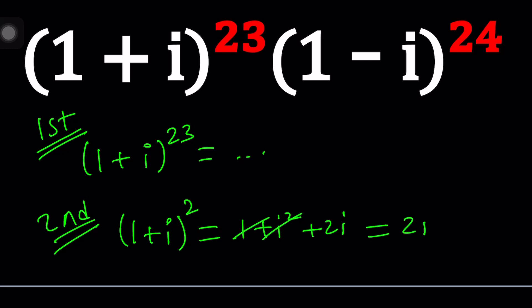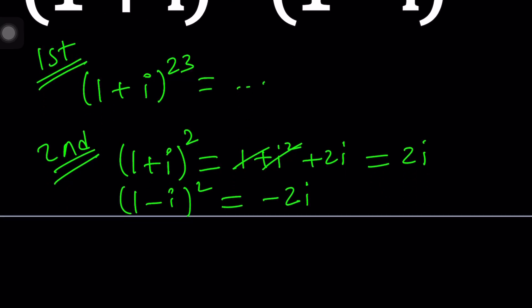And similarly, we have (1 - i)² equals negative 2i. We're going to use that information now.